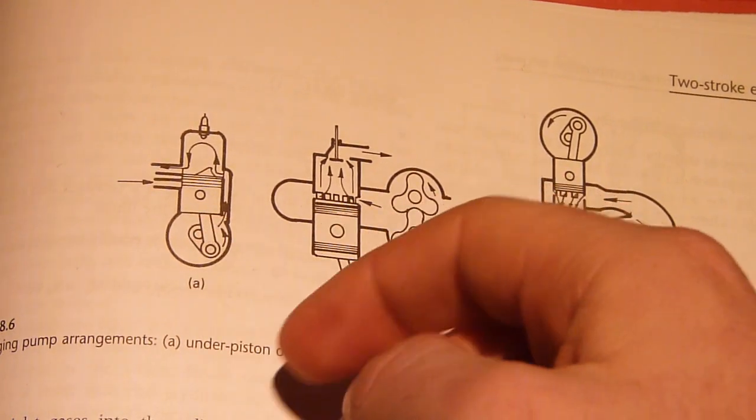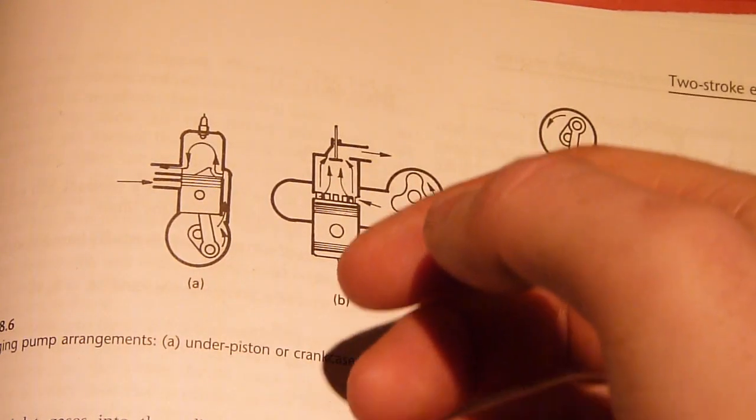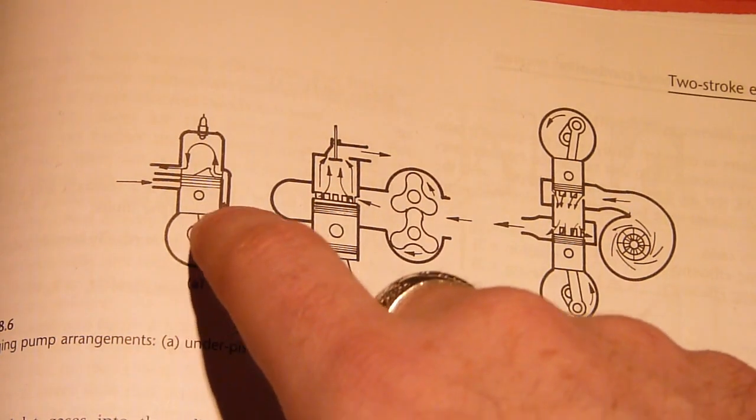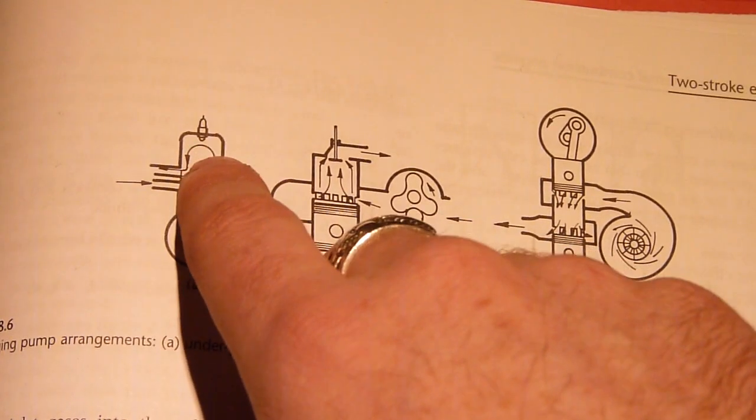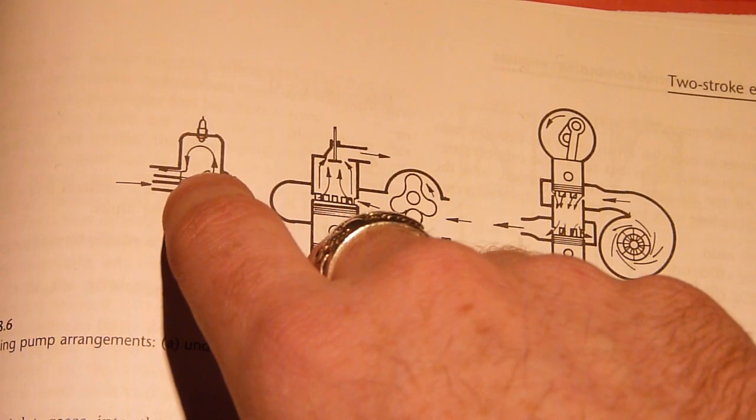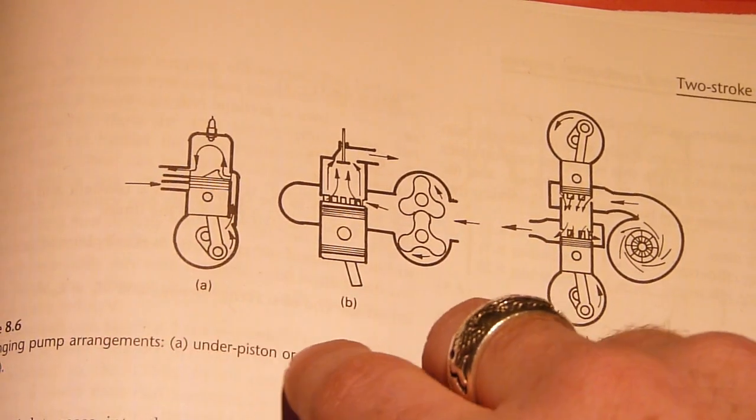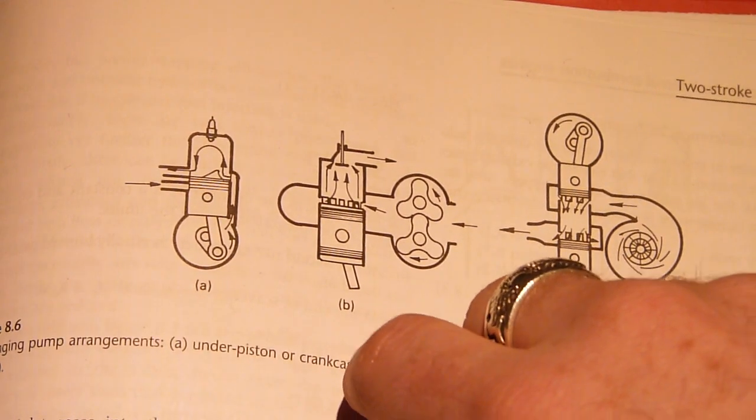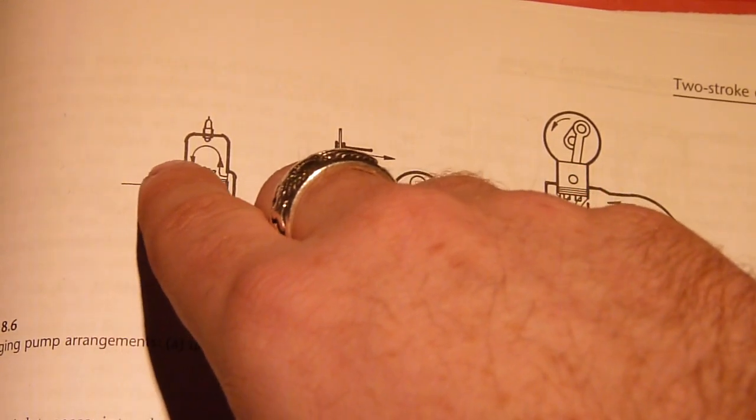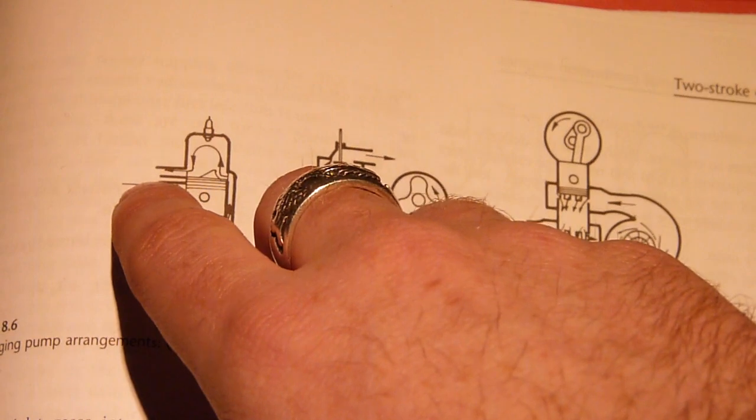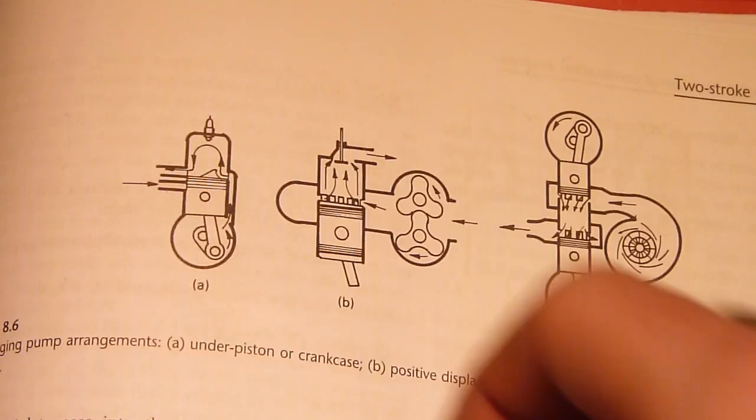Now in a two-stroke, the exhaust is an important part of the engine because when the piston uncovers the exhaust port, a pressure wave is sent down the exhaust and the exhaust actually bounces it back up and meets the short-circuited charge that has escaped from the cylinder and pushes it back in.